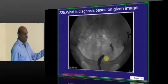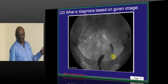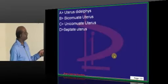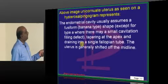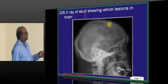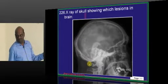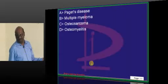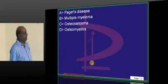Unicornuate uterus on HSG is a favorite topic of the examiner. There is a thickening of the calvarial margin, which is a typical case of Paget's disease. Paget's disease is a thickening and expansion of the diploë.